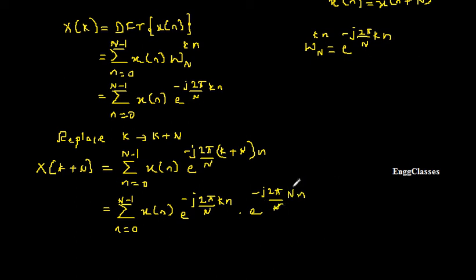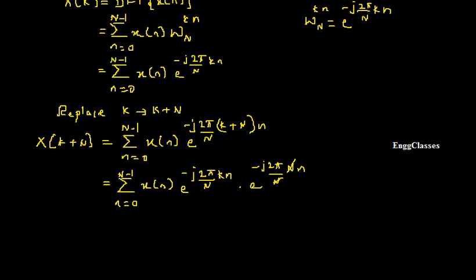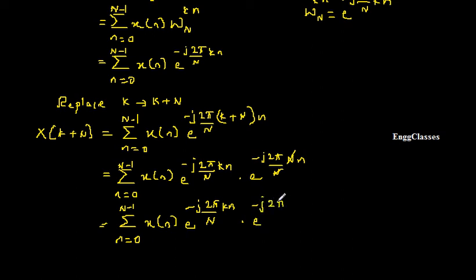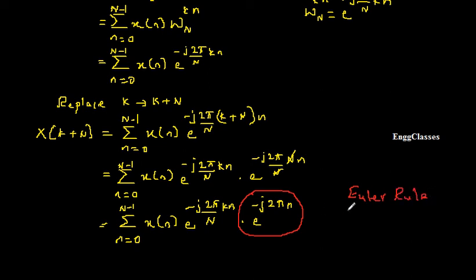Looking at the second factor, capital N in the denominator and capital N in the numerator cancel, leaving e to the power minus J 2 pi into small N. So we need to evaluate what e to the power minus J 2 pi N is equal to. I can express that using Euler's rule, which relates complex exponentials to sinusoidal terms.